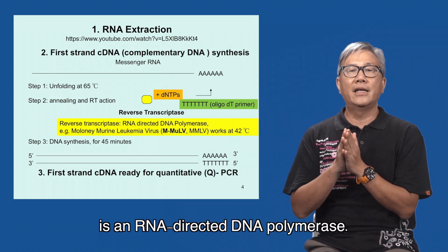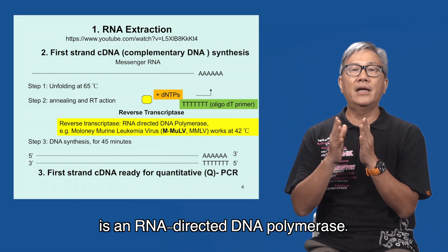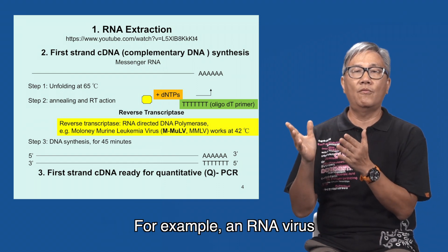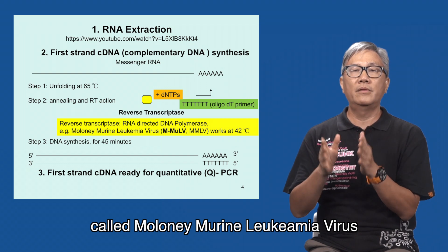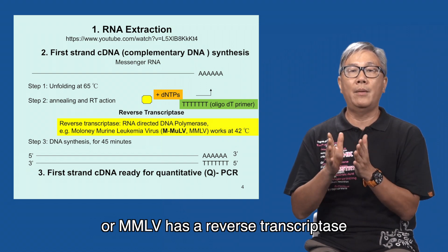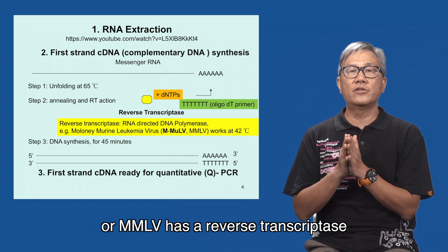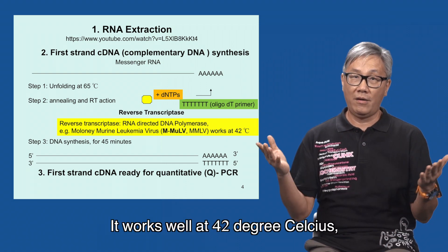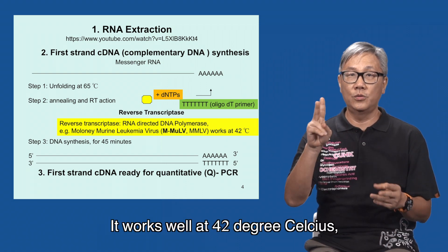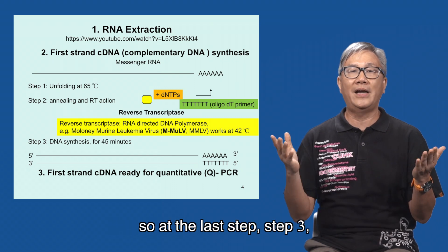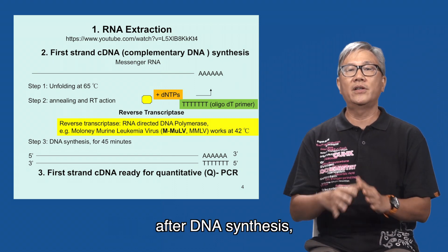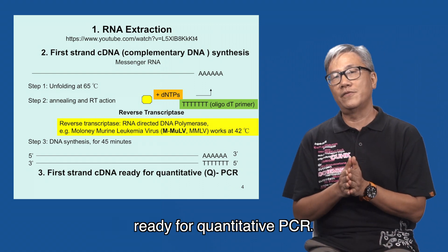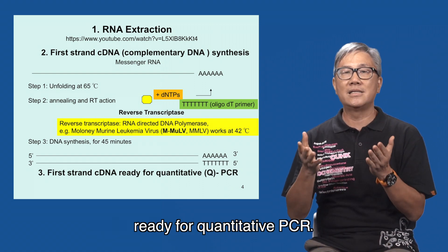Reverse transcriptase is an RNA-directed DNA polymerase. For example, an RNA virus called Moloney murine leukemia virus, or MMLV, has a reverse transcriptase cloned for such purpose. It works well at 42 degrees Celsius. After DNA synthesis in step three, we have the first-strand cDNA products ready for quantitative PCR.